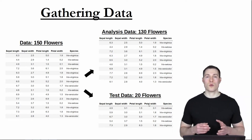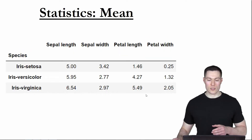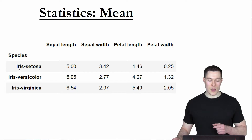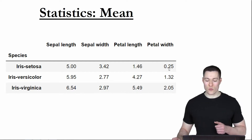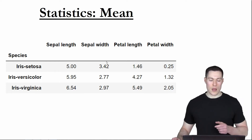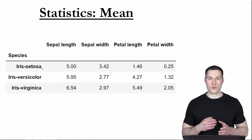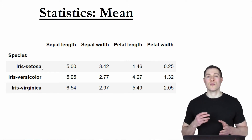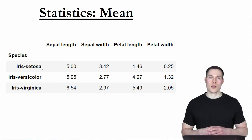To start your analysis, one thing you could do is calculate some statistics — for example, the mean of the different features with regard to the different types of flowers. What you can see here is that the iris setosa flowers have a petal length that is much smaller than the petal length of the other two types, and the same is true for the petal width. So with regard to the petal leaves, the iris setosa flowers seem to have the smallest leaves. But generally speaking, it's relatively difficult to detect such patterns just by looking at numbers.